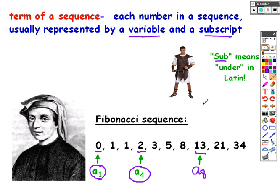In general, I can talk about any term in the sequence using the term a sub n. What is n? N would be the term number — just like here, this is the eighth term. A sub n would be the value of the eighth term, so n indicates the term number and a sub n is the value of that term. Here n is 4, meaning this is the fourth term, so a sub 4 is the value of the fourth term, which is 2.